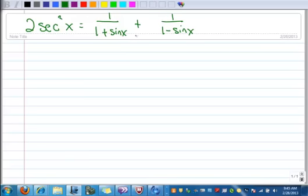In other words, the right hand side looks like the more complicated side. I've got sine x's everywhere, but where I'm going, I don't have sine x's. In fact, I have secants,